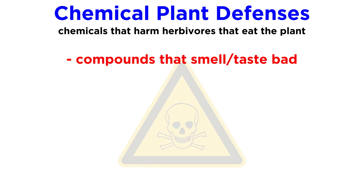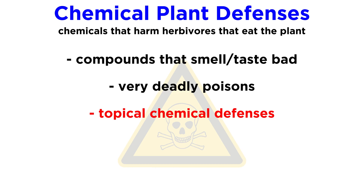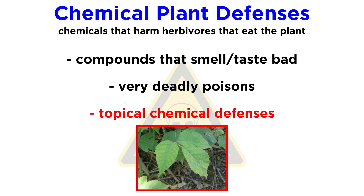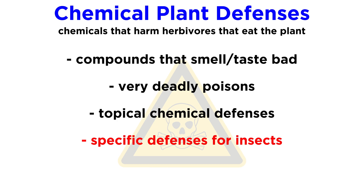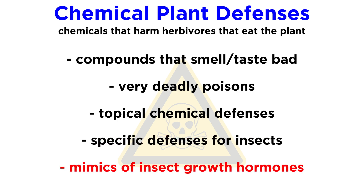Plant chemical defenses can range from chemicals that make a plant smell or taste bad to an herbivore, all the way up to extremely deadly poisons. There are also plants with topical chemical defenses like poison ivy and wild parsnip. If an animal gets the oils from these plants on their exposed skin, it can wind up with an itchy rash or even chemical burns. And again, plants have a special set of chemical defenses for dealing with insects. On top of taste deterrents and toxins, some plants also produce chemical compounds that mimic insect growth hormones. If an insect consumes too much of these hormone mimics, it can be prevented from changing to its next life stage, or reproducing.